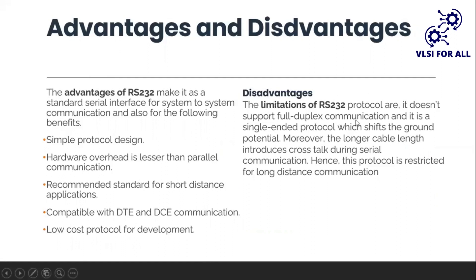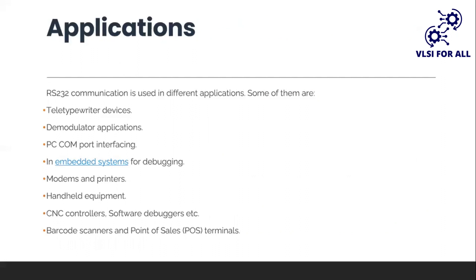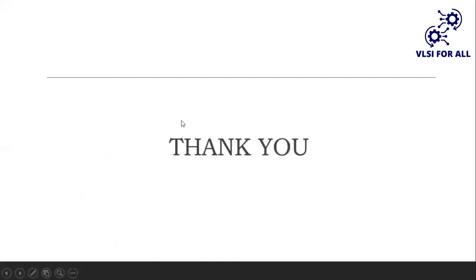The disadvantages of RS-232 are: it doesn't support full duplex communication; it is a single-ended protocol which shifts the ground potential; and longer cables can cause errors and jitter over longer distances. Applications of RS-232 include teletype devices, embedded systems for debugging, modems and printers, handheld equipment, barcode scanners, and point-of-sale terminals. That's all on the RS-232 communication protocol — thank you.